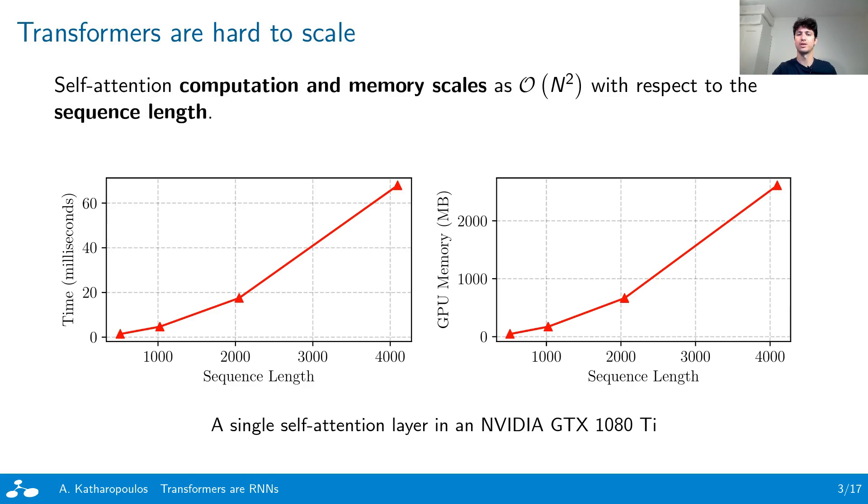Despite their success, transformers are notoriously difficult to scale to long sequences. Their core mechanism, namely self-attention, has quadratic complexity both in terms of memory and computation. For example, in these plots we see that for a single self-attention layer with batch size of one, we need more than two gigabytes of GPU memory and more than 60 milliseconds when the sequence is 4000 elements long.